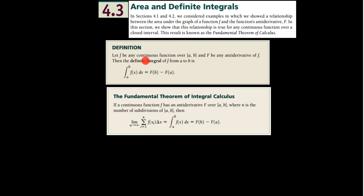Then the definite integral of lowercase f from a to b is written with the notation like this. On a number line, a is the smaller number — the number farthest to the left — and b is the number farthest to the right. The notation is written with a on the lower part of the integral sign and b on the upper part, which tells you where your interval is located.